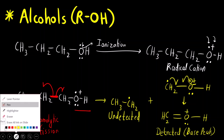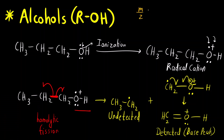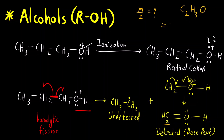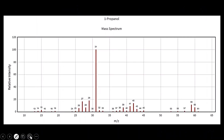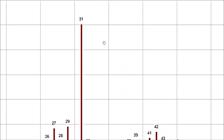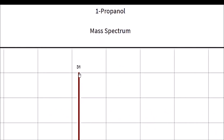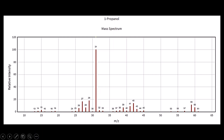We need to find the m/z value for this charged fragment. The m/z value is the molecular mass of the fragment. The fragment has one carbon, two plus one hydrogen (three total), and one oxygen: C₁H₃O. So: (12×1) + (1×3) + 16 = 12 + 3 + 16 = 31. So m/z = 31. Looking at the mass spectrum of 1-propanol, the maximum peak is at m/z = 31, confirming our answer.